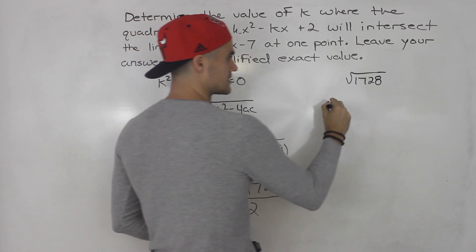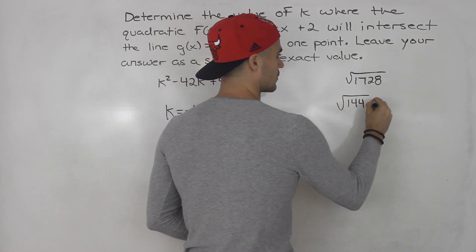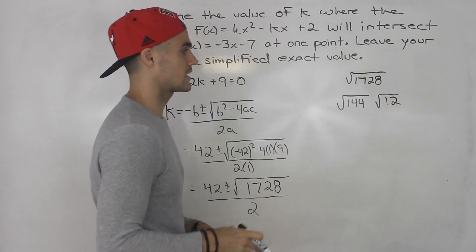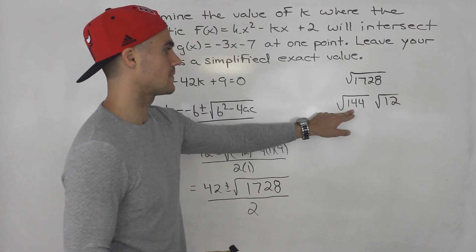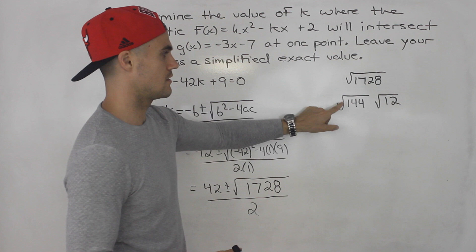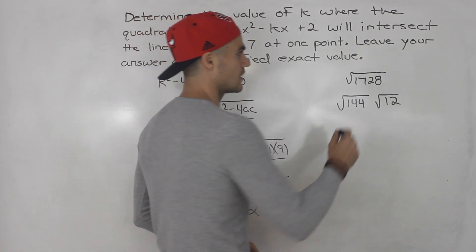And actually, you can split this up into root 144 times root 12. 144 times 12 is 1728. And notice root 144, that's a rootable number. That's 12.